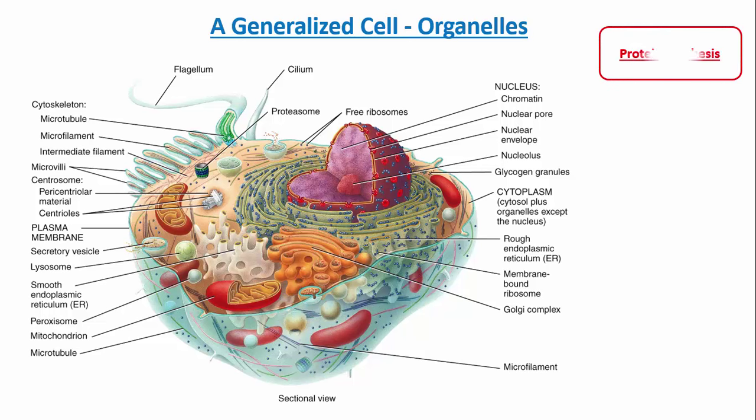The first category involves organelles involved in protein synthesis. I'm going to highlight three. There are ribosomes floating in the cytoplasm. There's also something called rough endoplasmic reticulum that starts the protein synthesis. And then there's something called the Golgi complex that puts final modifications on the proteins towards the end of protein synthesis. Whenever you think about protein synthesis, think of these big three.